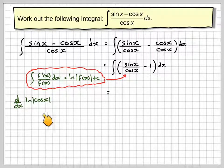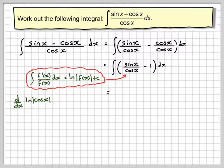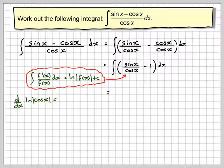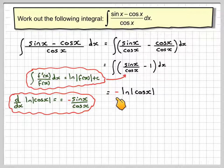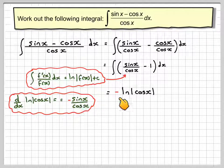So d dx of ln of cos of x, which is what I think my answer will be. So if I differentiate cos x, I get minus sin x, put it over itself. So therefore I have to compensate because I've got an extra minus sign.